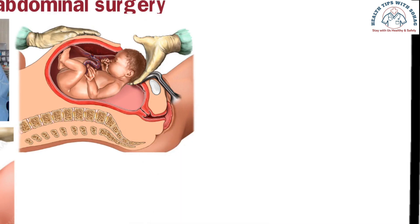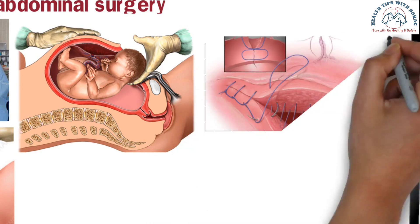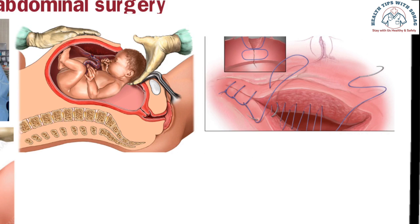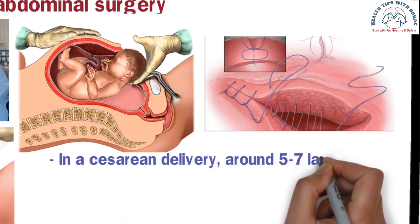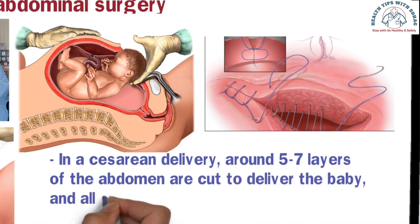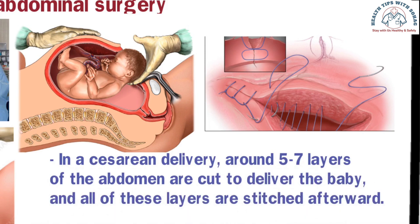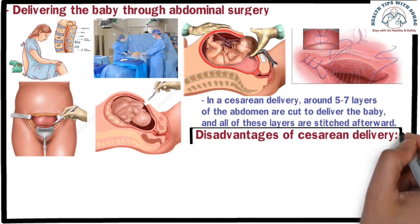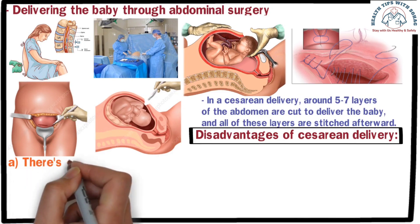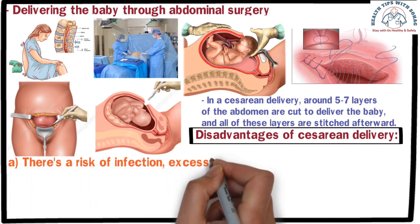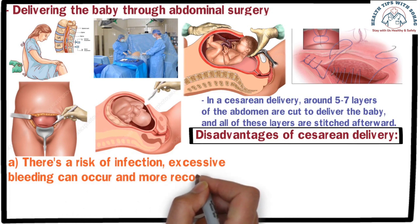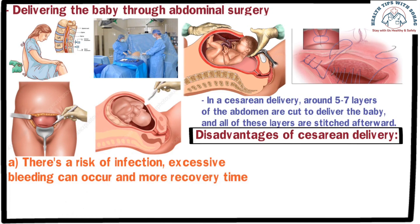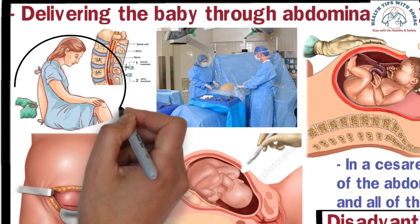Once the uterus is opened, the baby is delivered and the placenta is removed. Each layer is then carefully stitched, and finally the skin is stitched up. In a caesarean delivery, around five to seven layers of the abdomen are cut to deliver the baby, and all these layers are stitched afterward. Now let's discuss the potential disadvantages of caesarean delivery. Number one: since it is a major surgery, there are risks of infection and excessive bleeding, and the recovery time is longer. Number two: since anesthesia is used, there is a possibility of a reaction.